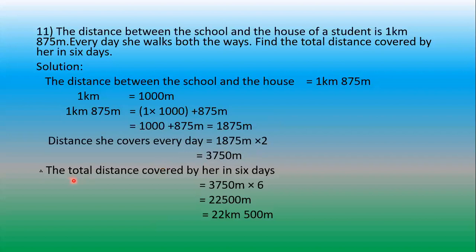Now we find the total distance covered by her in 6 days. Distance she covers in a day multiplied by the number of days gives the answer: 3750 × 6 = 22,500 meters. Since it is more than 1000, we convert into kilometers. The last three digits — 500 — are the meters; the remaining number 22 is the kilometers. So the answer is 22 kilometers 500 meters.